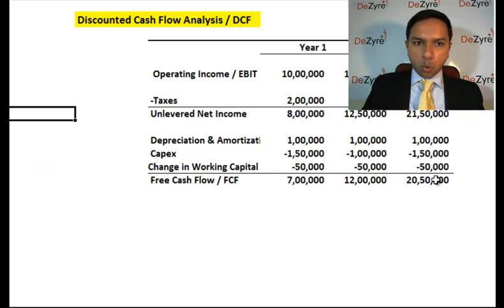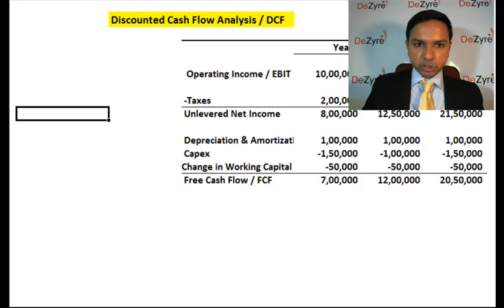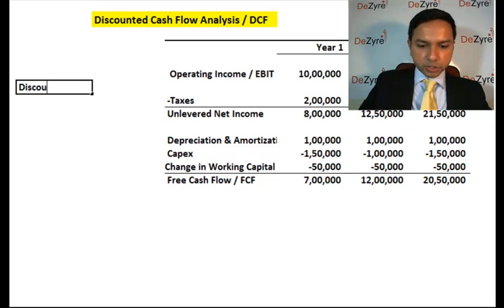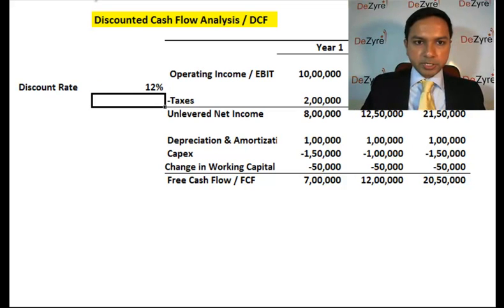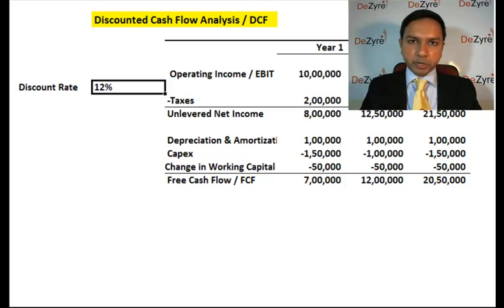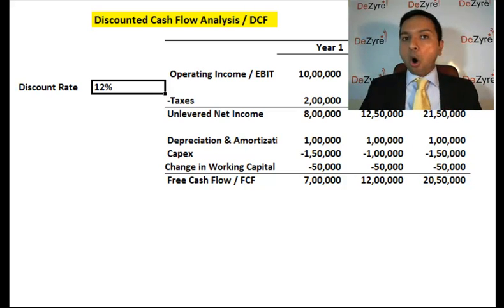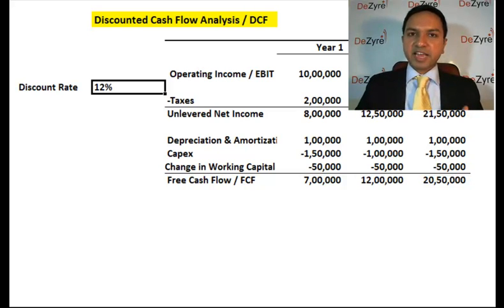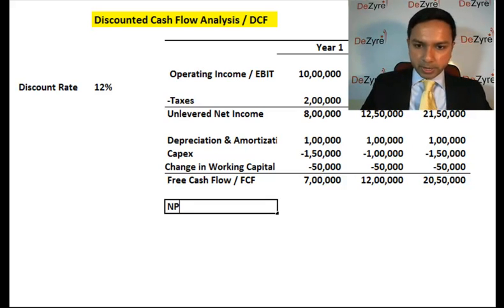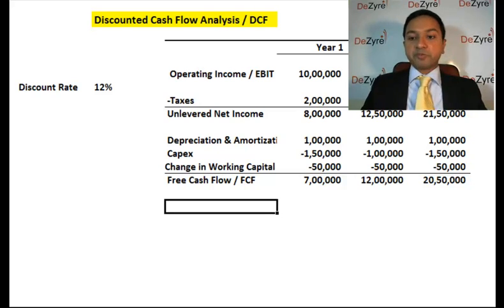For the discount rate, there are a couple of approaches: management might say their cost of capital is 12%, or investors specify their required return, or you derive the discount rate using the Weighted Average Cost of Capital and the CAPM model. Let's use 12% as our discount rate.